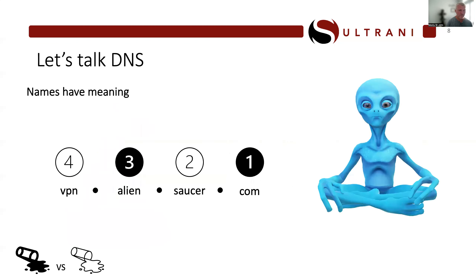Let's do a more practical example with our blue alien. I've broken a domain into four parts: vpn.alien.saucer.com. I've numbered them four, three, two, one from the left. .com is the Top Level Domain — it can be anything: .com, .net, .org, whatever. 'Saucer' is the actual second-level domain name. 'Alien' and 'vpn' are the subdomains.